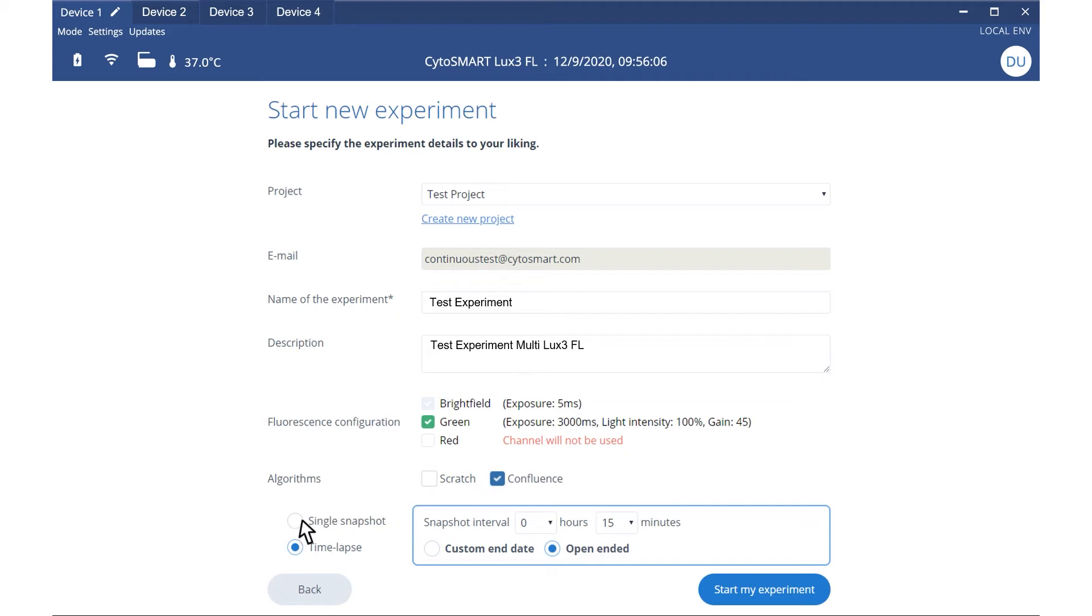Indicate whether you'd like to make a single snapshot or time-lapse. For time-lapse, specify the imaging interval and the endpoint or open-ended imaging. Then you're ready to start your experiment.